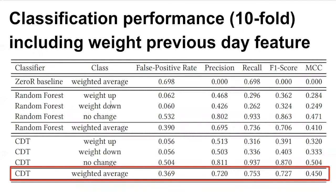Within these experiments, we mainly noted one specific parameter: the weight previous day feature, because this may have a huge effect on the output of our machine learning algorithms. We tested our first machine learning experiment set with the weight previous day feature. The collected results can be seen in the table here. The classification decision tree shows the best results among all other methods. For performance comparison, we used the zero-R algorithm as the baseline.